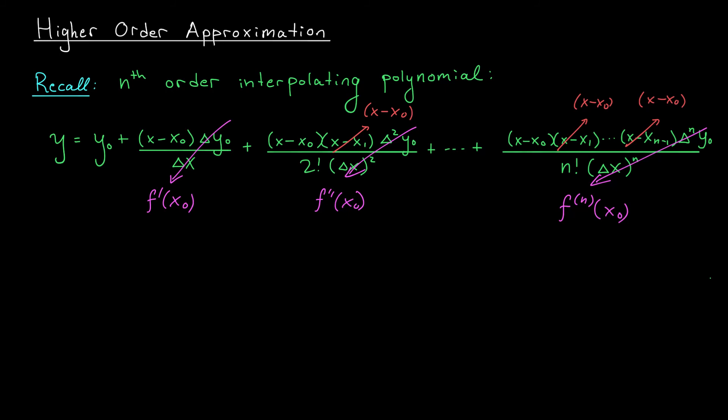Okay, now that we've analyzed how each piece changes as we apply this limit, we're ready to write down our nth order polynomial approximation. It's given by y equals y_0, which once again I'm going to denote by f(x_0), plus f'(x_0) times (x - x_0),